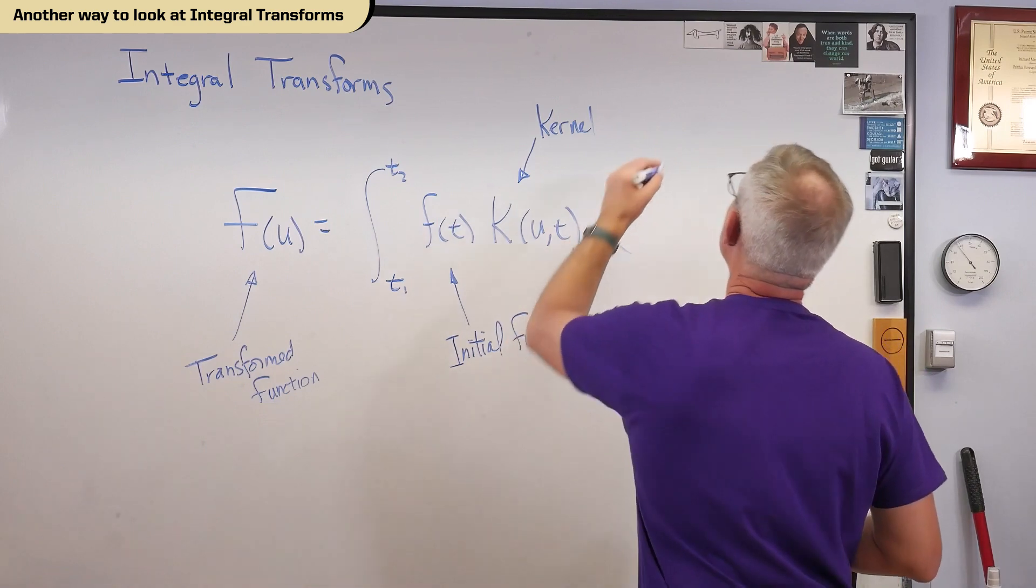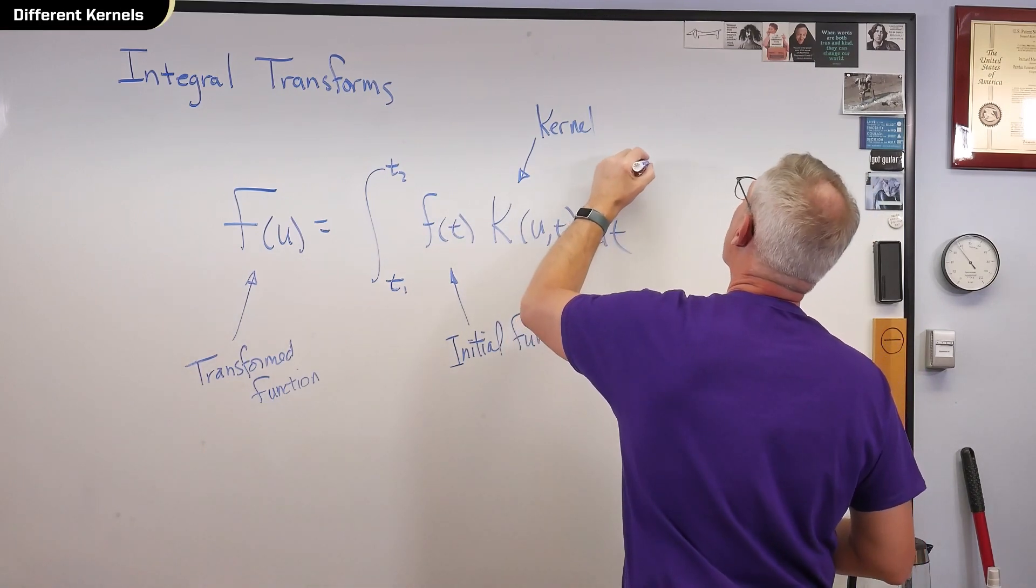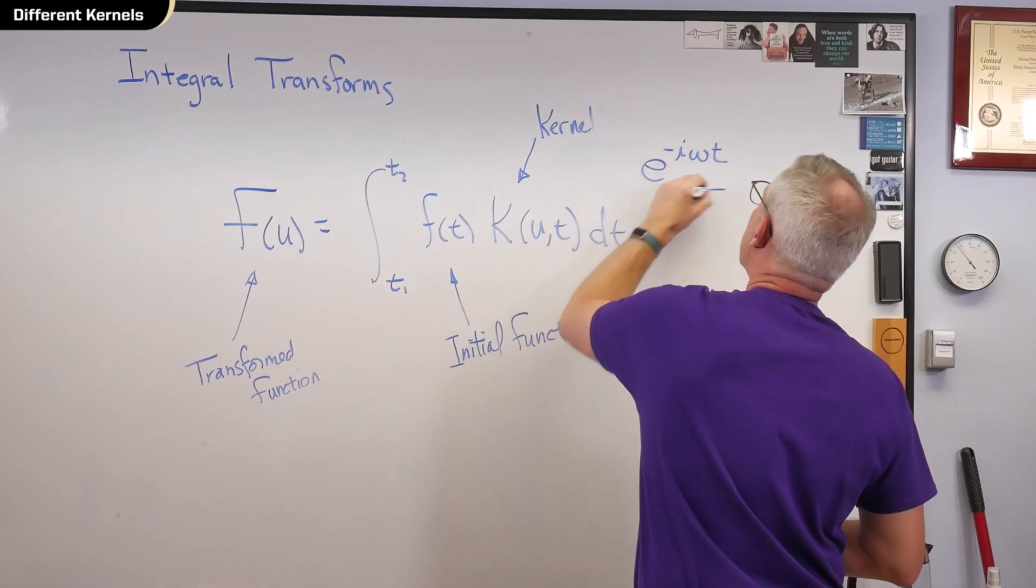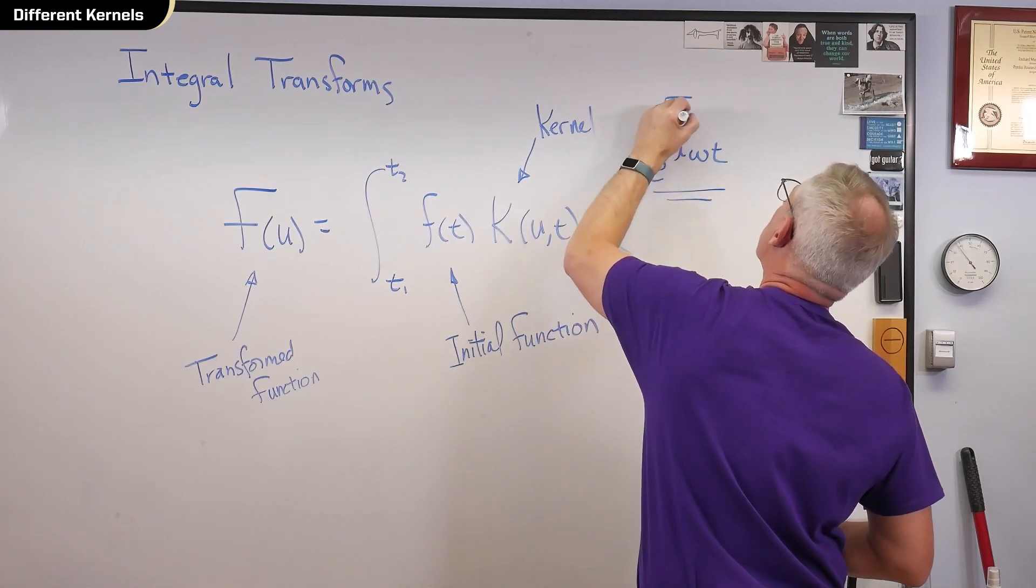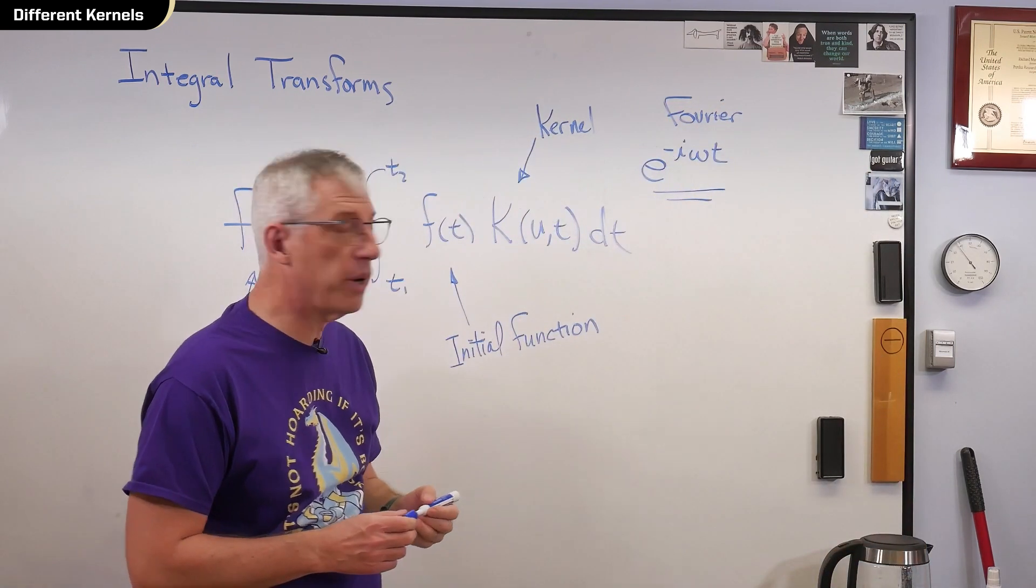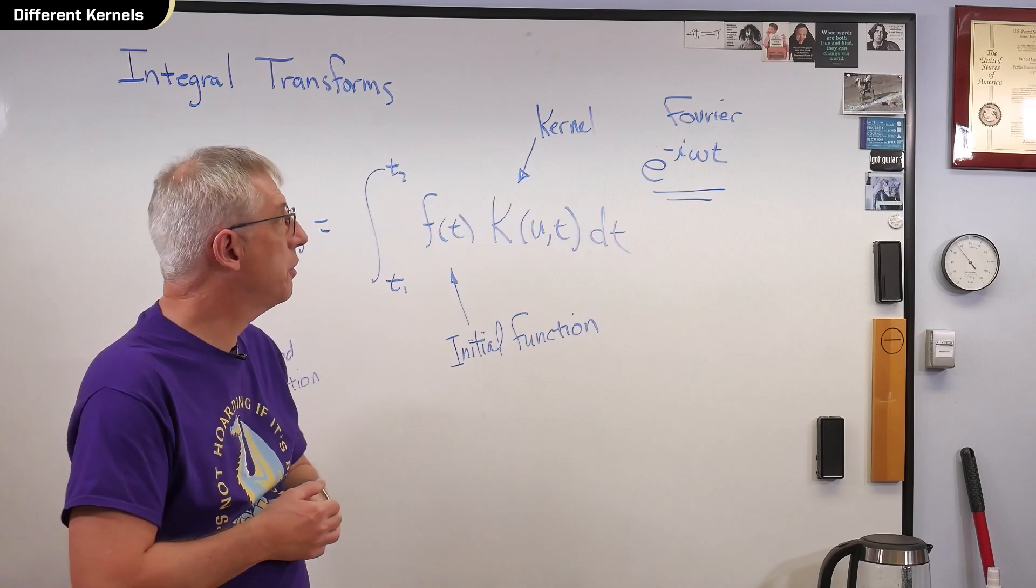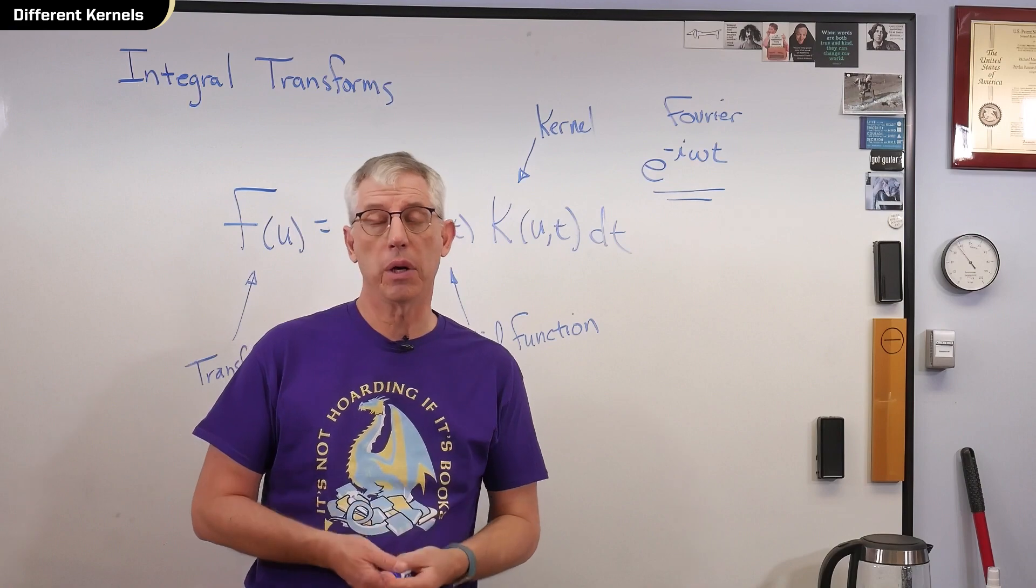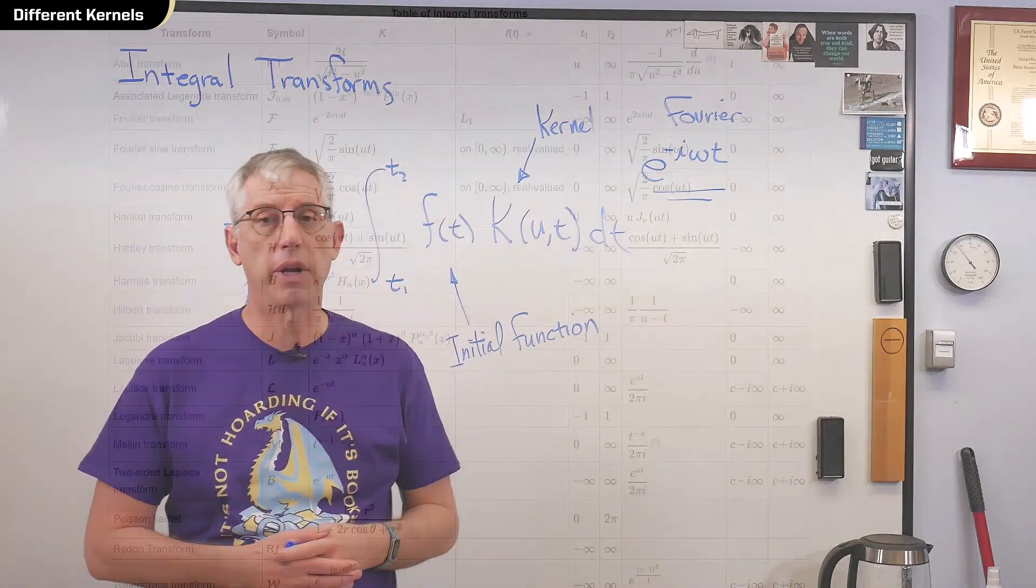Well, the kernel I'm using, right there, is e to the minus i omega t. That's the kernel for a Fourier transform, right? That's for a Fourier transform. Now, there are other transforms. There's a Laplace transform. If you look on Wikipedia, there's a whole list of transforms.